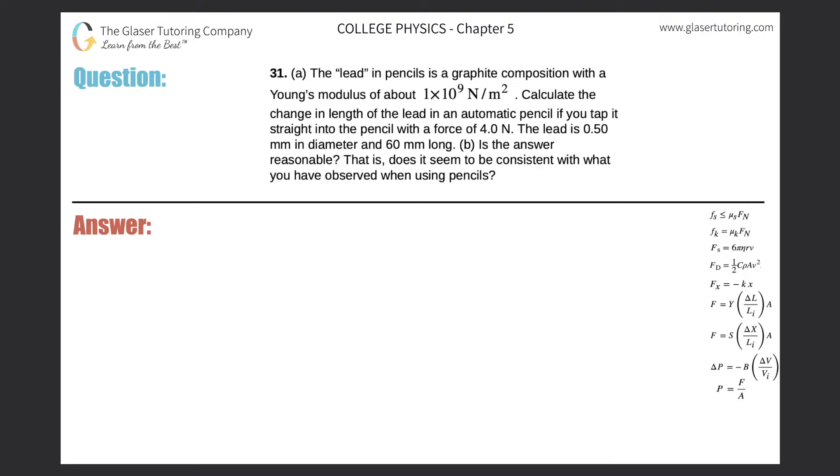Number 31, lead array. The lead in pencils is a graphite composition with a Young's modulus of about 1 times 10 to the 9 newtons per meter squared. Calculate the change in length of the lead in an automatic pencil if you tap it straight into the pencil with a force of 4 newtons. The lead is 0.5 millimeters in diameter and 60 millimeters long.